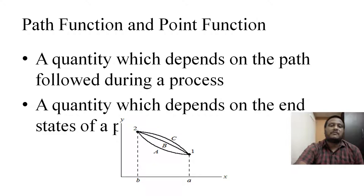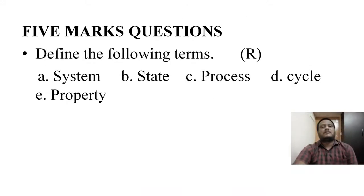Based on this, in your end examination, a five marks question may come: define the following terms. It comes under remembering. One term defined gives you one mark. The question is: system, state, process, cycle, and property.